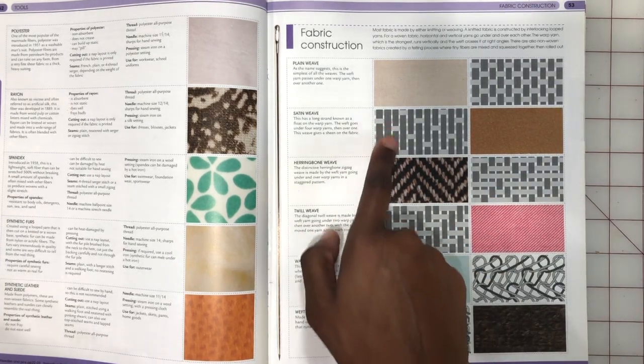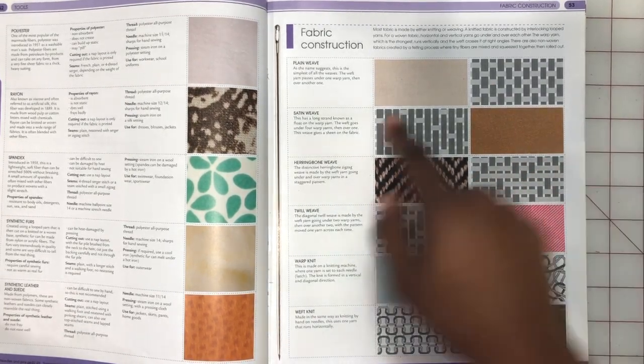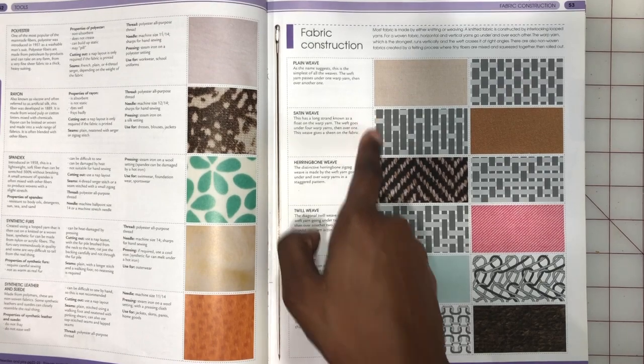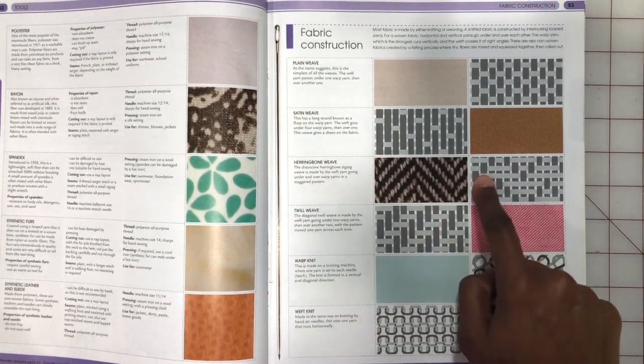So it's not as staggered as you see here, it's a little more tightly knit and where the staggers go across. In the satin weave you see it goes down lengthwise, and during the herringbone we see it go across widthwise.